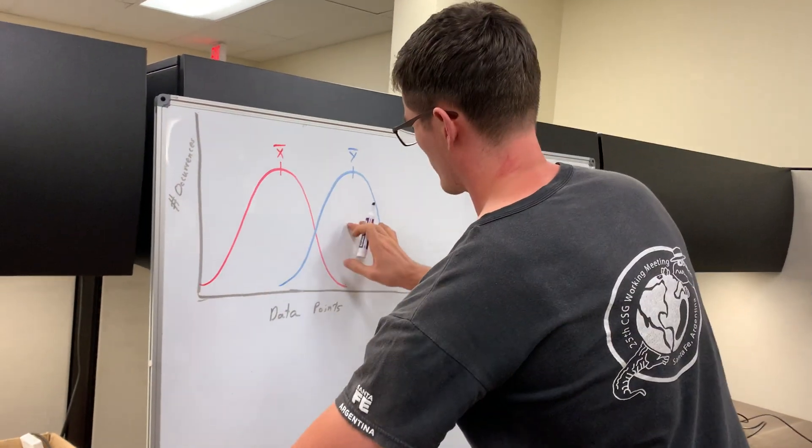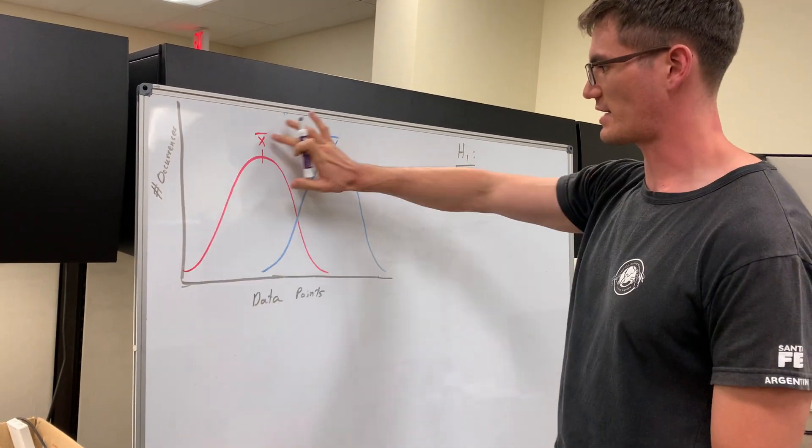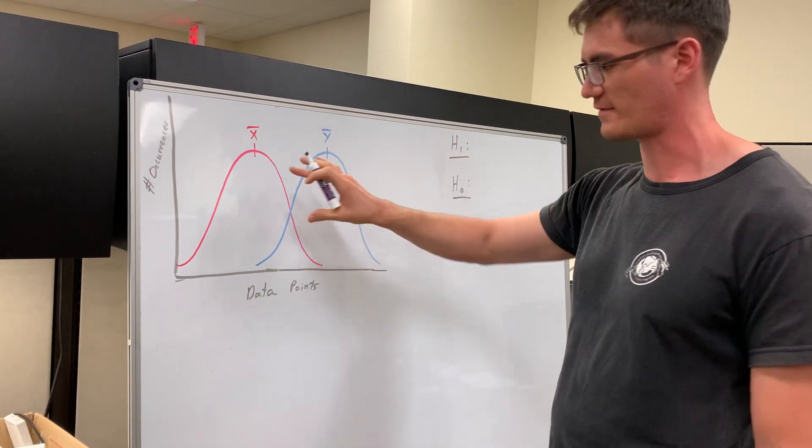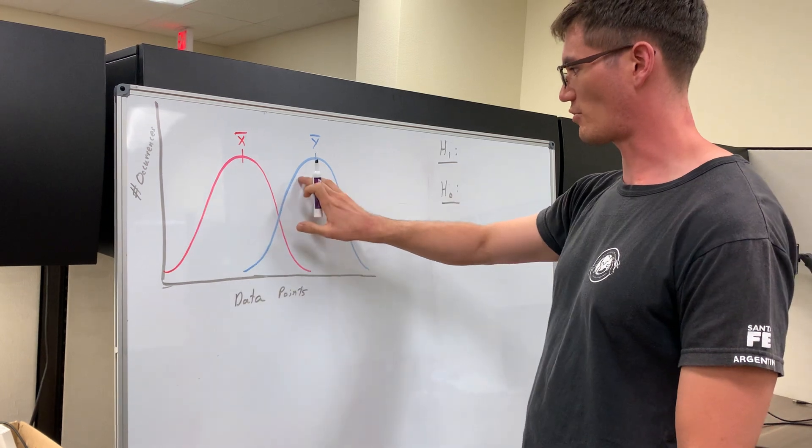So basically, if you imagine these curves as essentially histograms or smoothed out histograms, or if you've read on integrals, smoothed out histograms, visual representations of treatment x and treatment y.